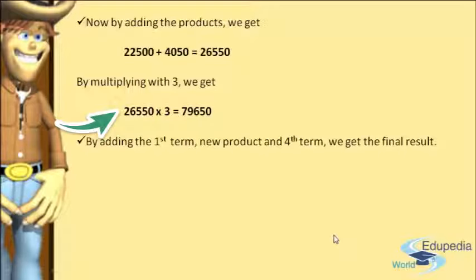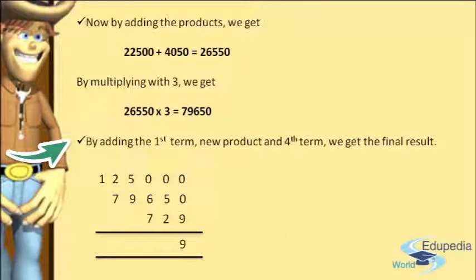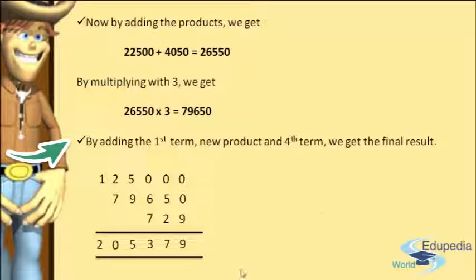Finally, in step number 6, we add the first term (125,000), the new product (79,650), and the fourth term (729). Writing these three values sequentially and adding: 0+0+9=9; 0+5+2=7; 0+6+7=13, write 3 carry 1; 1+9+0=10, 10+5=15, write 5 carry 1; 1+7+8+2=10, write 0 carry 1; 1+1=2. Therefore the final result is 205,379, and so 59³ = 205,379.